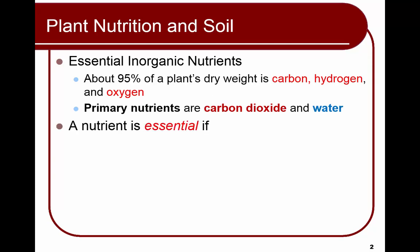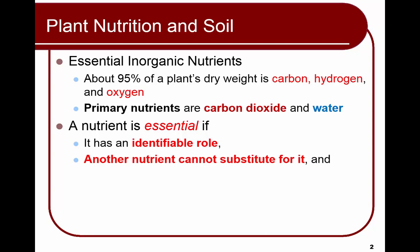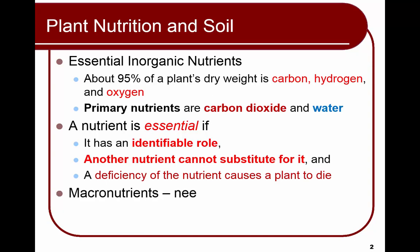A nutrient is considered essential if it has an identifiable role and there's not another nutrient that can substitute for it, and if the plant doesn't have enough of this nutrient, it's going to die. Plants need these nutrients to be absorbed as minerals by the roots. Macro means large, so we need macronutrients in large amounts.